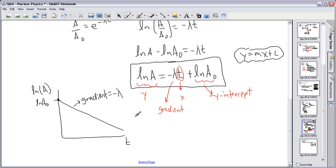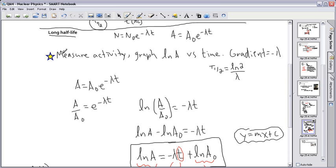And again, once I have λ, what do I do? Like I talked about here. So I said, you measure the activity, you graph ln versus time, and your gradient will be minus λ. And from that, you get t₁/₂. Because ln 2 divided by λ gets you t₁/₂.